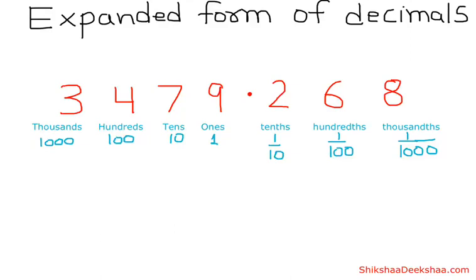How to write a decimal number into its expanded form. Let's take an example: 3,479.268. We know that before the decimal point the place values are ones, tens, hundreds, and thousands, and after the point it is tenths, hundredths, and thousandths.